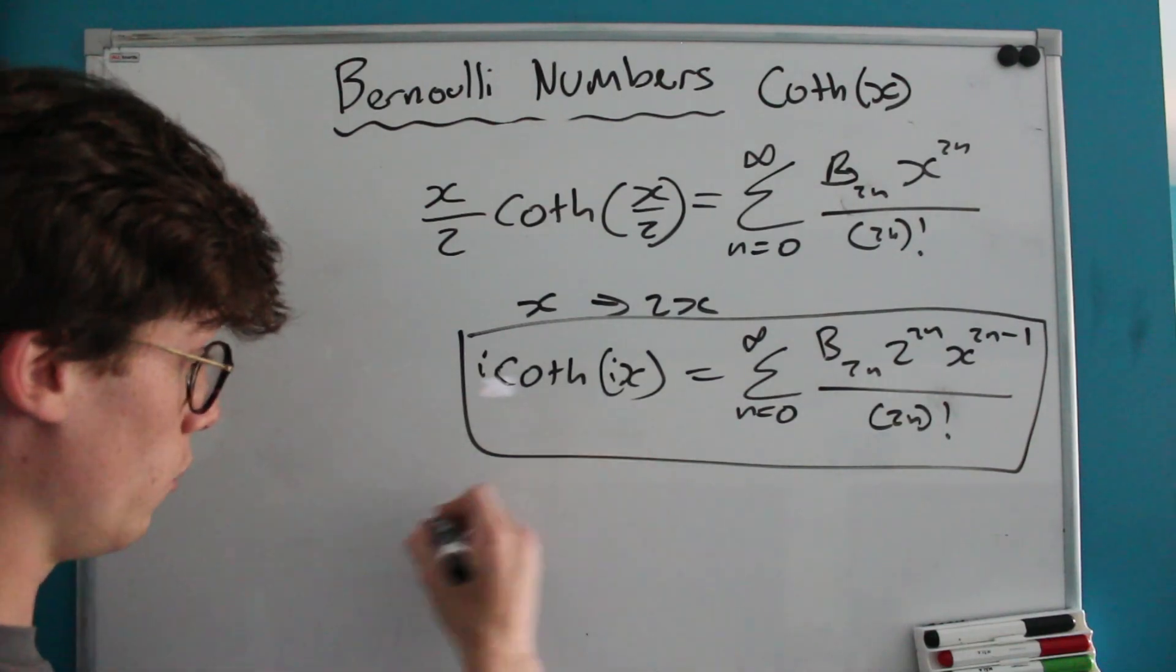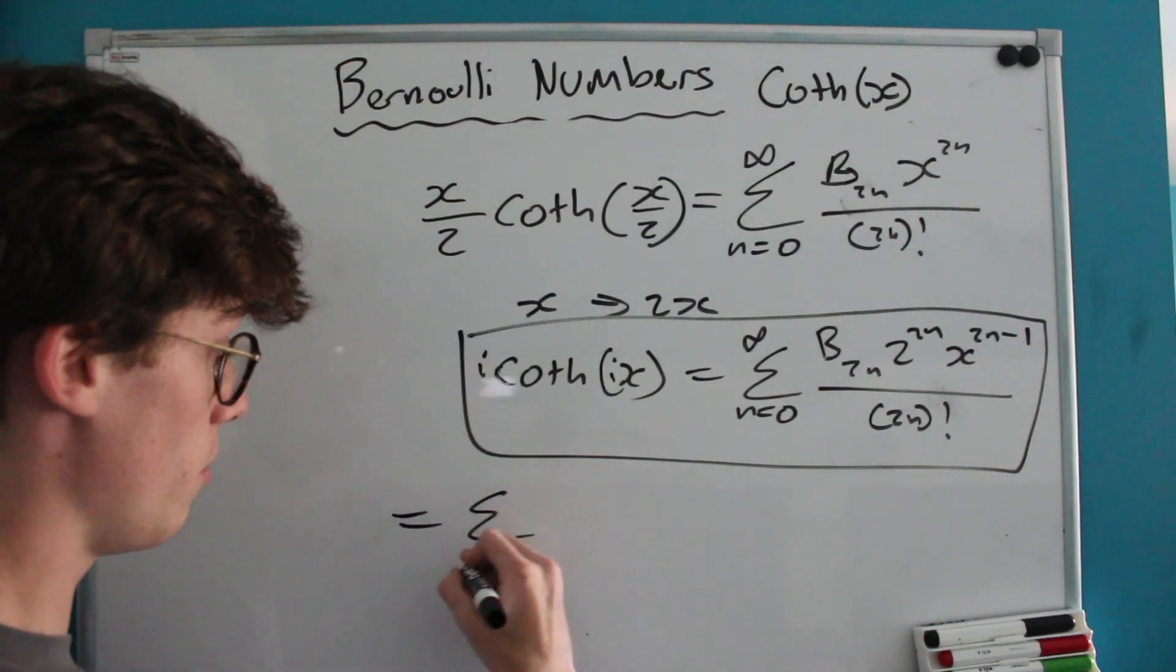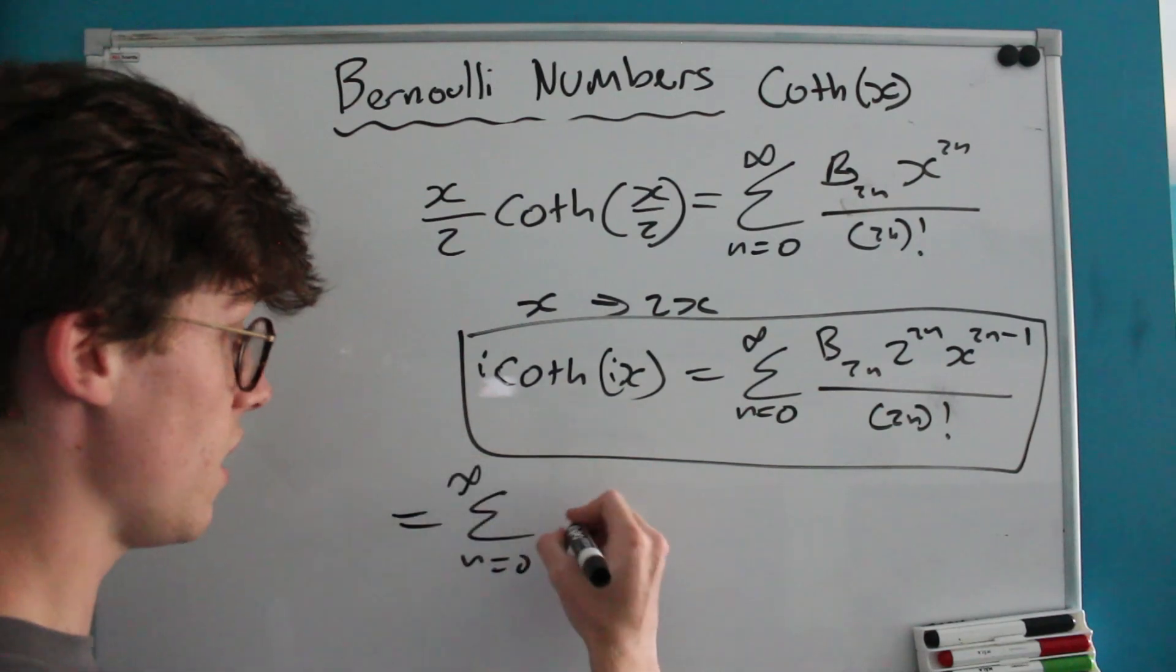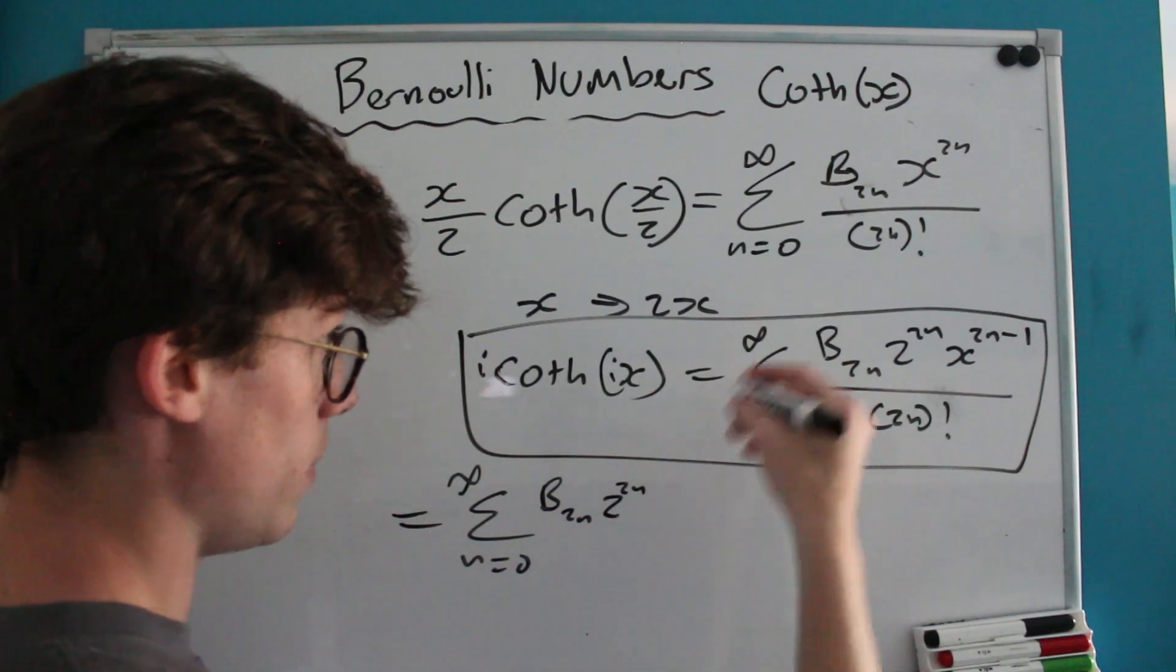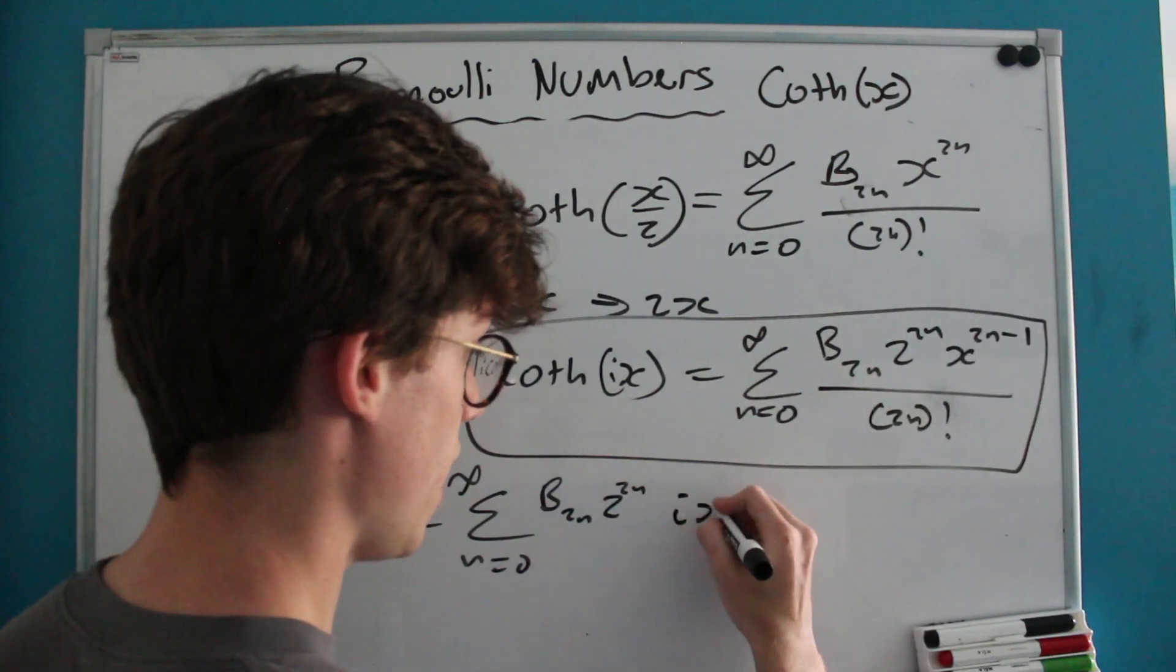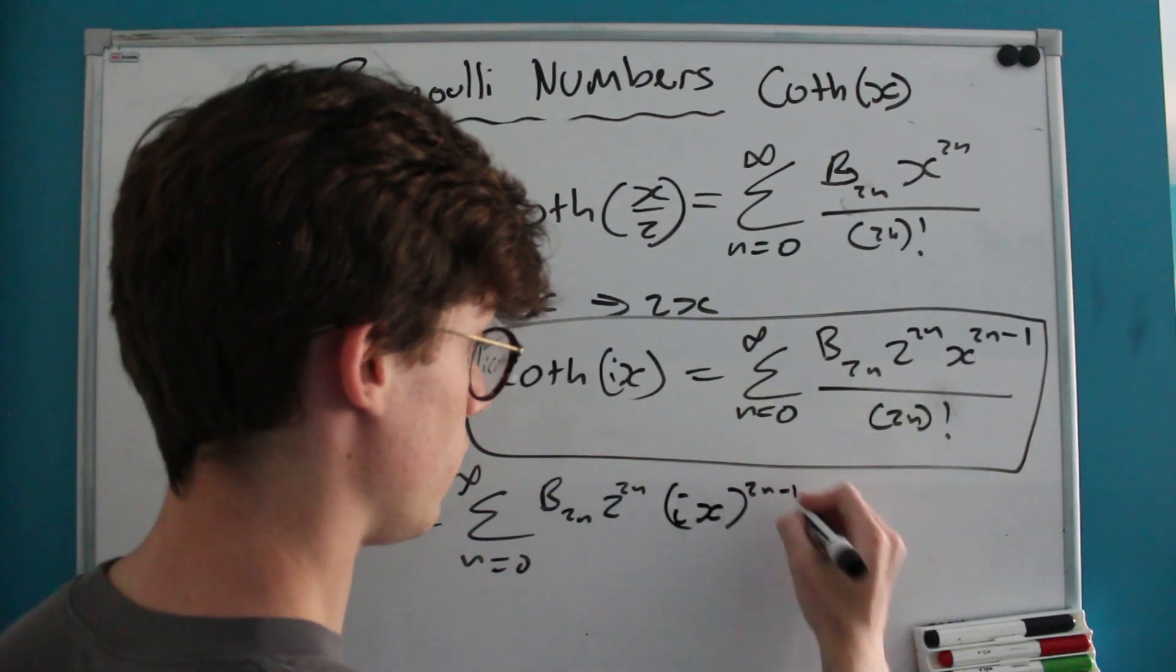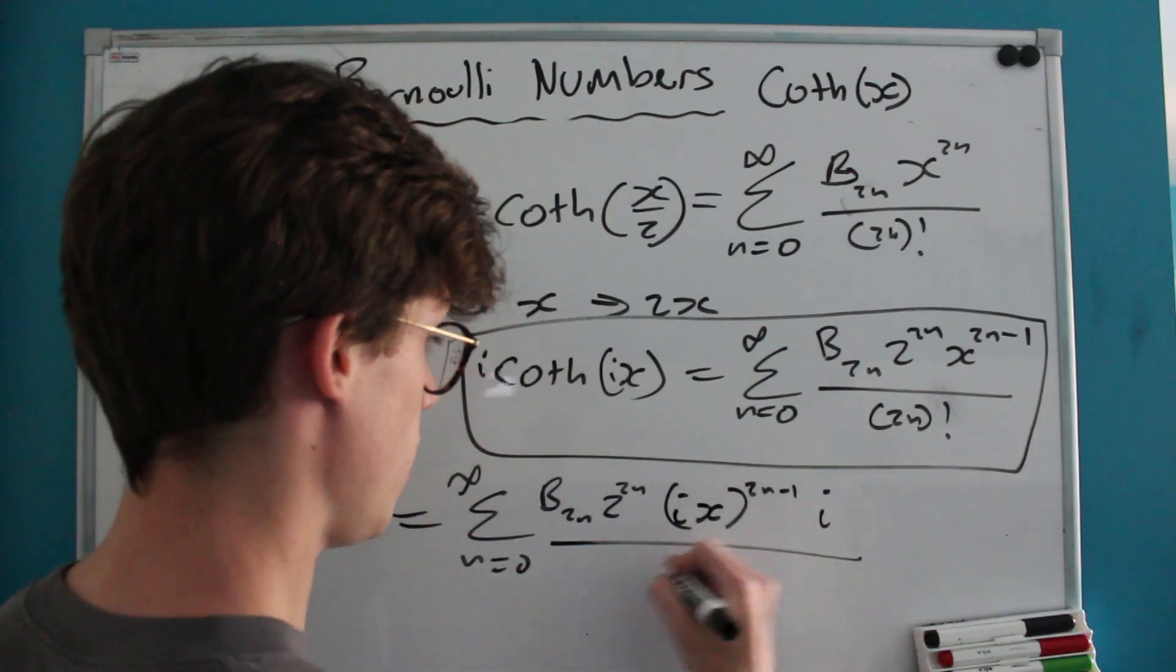We're going to end up with the sum from n equals 0 to infinity of b_2n times 2^(2n) times (iX)^(2n-1) times i divided by (2n)!.